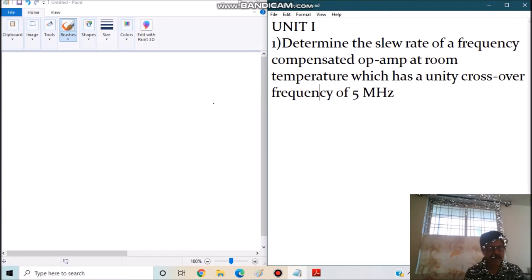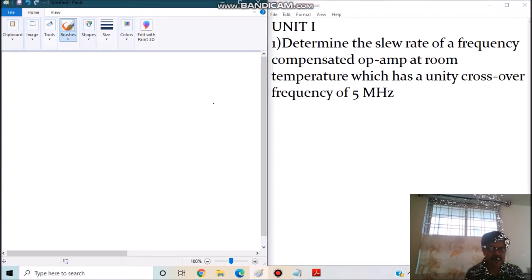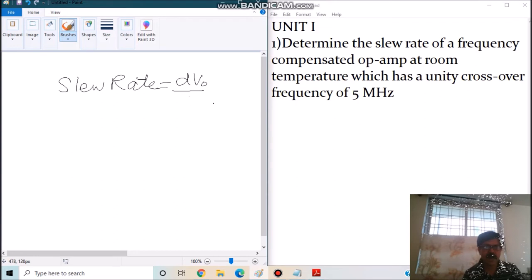As we know, the slew rate is defined as the maximum rate of change of output voltage per unit time. So we know slew rate can be defined as dVo by dt maximum. Given the condition of unity crossover frequency, the gain is unity.